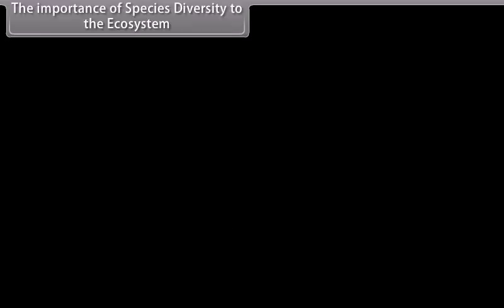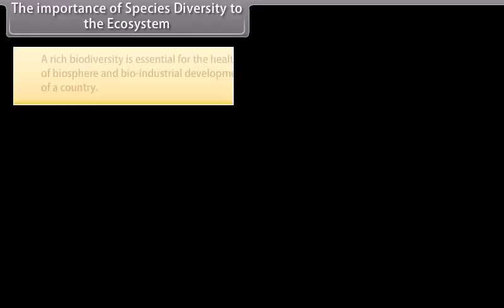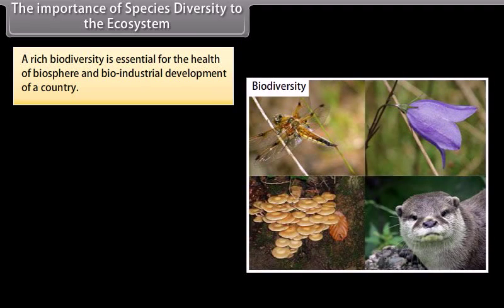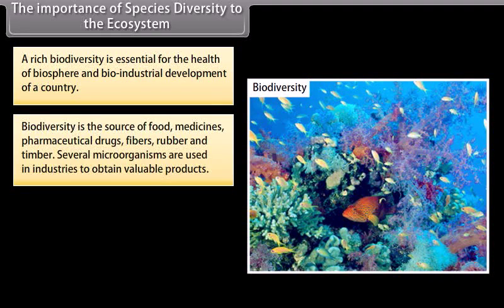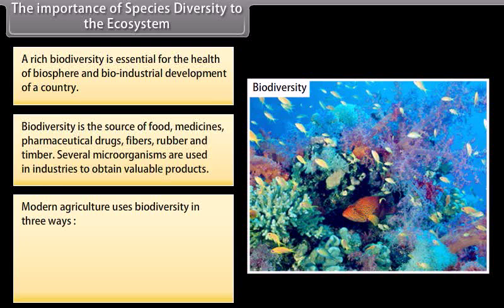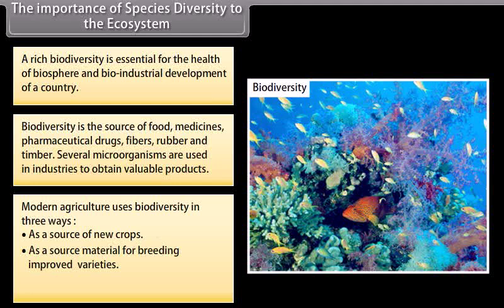The importance of species diversity to the ecosystem. Rich biodiversity is essential for the health of the biosphere and bio-industrial development of a country. Biodiversity is the source of food, medicines, pharmaceutical drugs, fibres, rubber, and timber. Several microorganisms are used in industries to obtain valuable products. Modern agriculture uses biodiversity in three ways: as a source of new crops, as source material for breeding improved varieties, and as a source of new biodegradable pesticides.